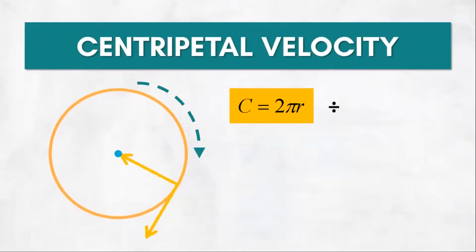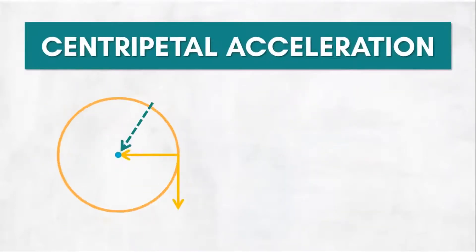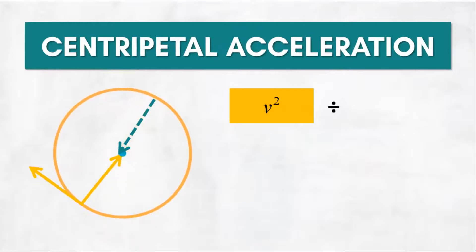Centripetal velocity is given by dividing the circumference of the circle by the time per revolution. Square the centripetal velocity and divide it by the radius of the circle and you'll get the centripetal acceleration.